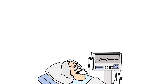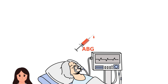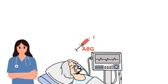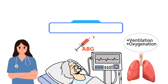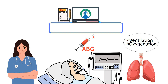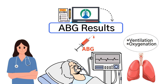When managing a patient on mechanical ventilation, it's important to carefully interpret their ABG results to guide your clinical decisions. These values provide insight into the patient's respiratory status, revealing whether ventilation or oxygenation needs adjustment. This video breaks down a practice question that will challenge your ability to analyze ABG results and make precise adjustments to the patient's ventilator settings. Let's get into the question.